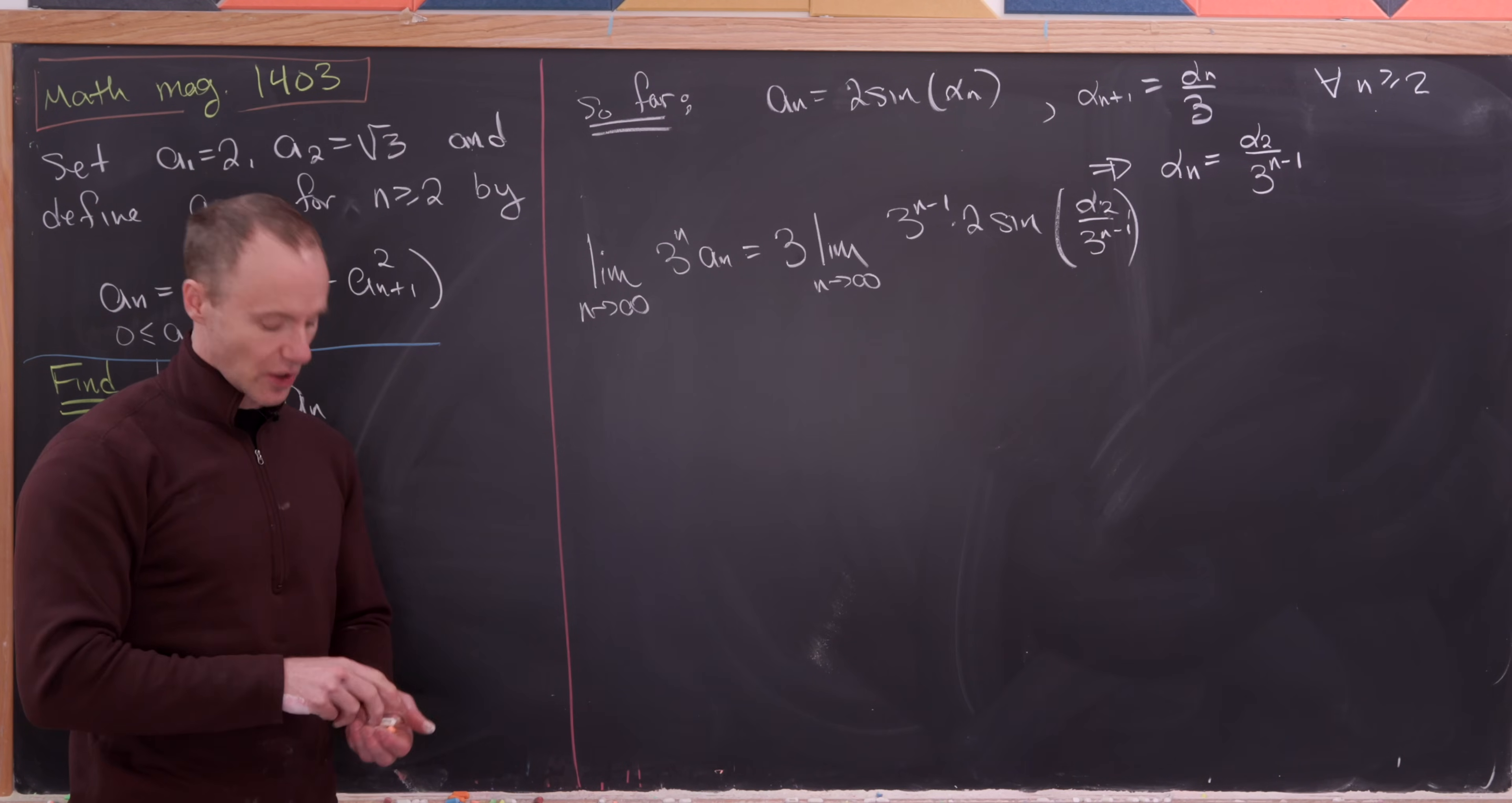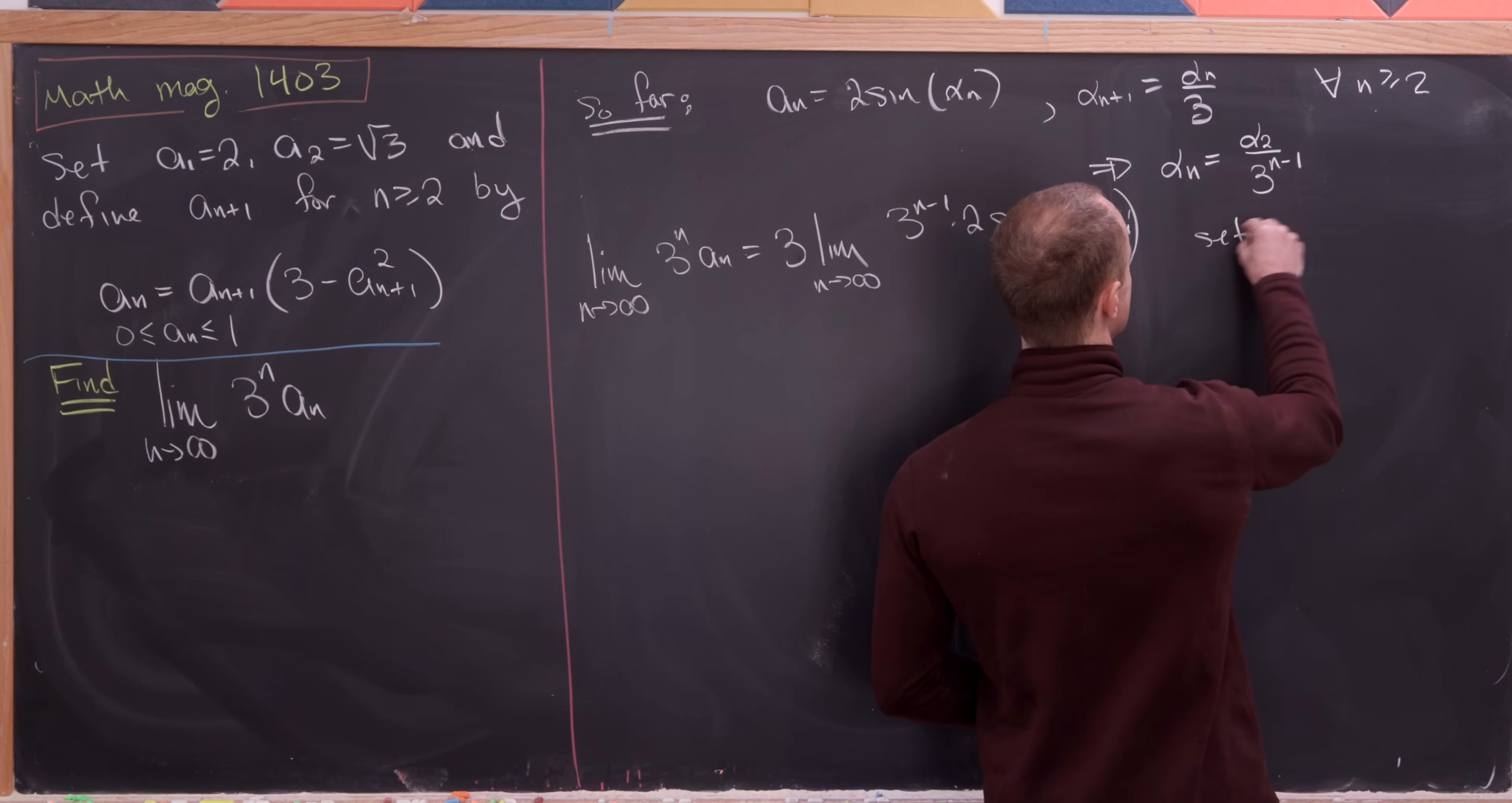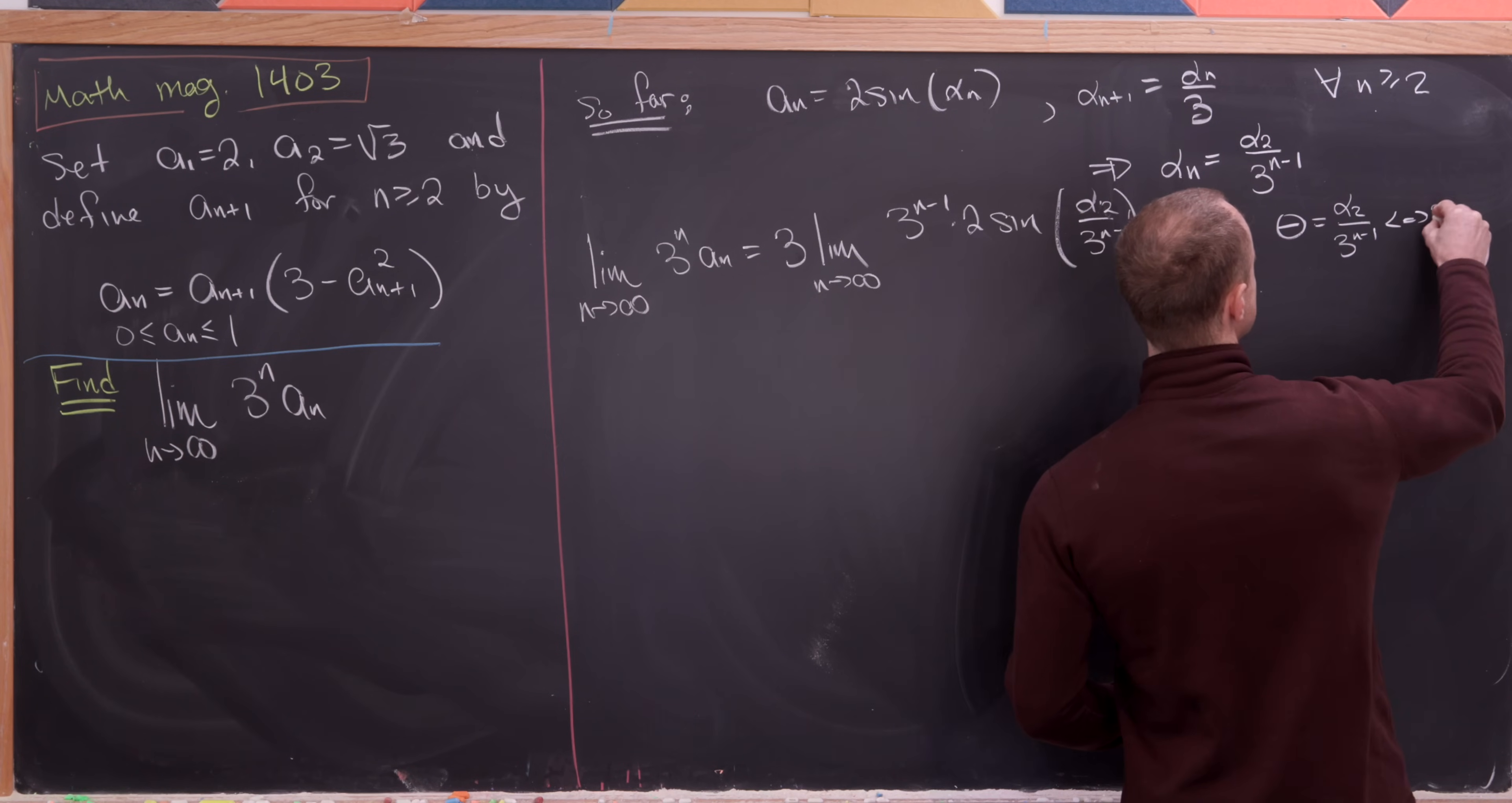But now this is actually a well-known limit and we can see that if we set, for instance, theta equals alpha sub 2 over 3 to the n minus 1, which is equivalent to saying that 3 to the n minus 1 is, let's see, alpha 2 over theta.